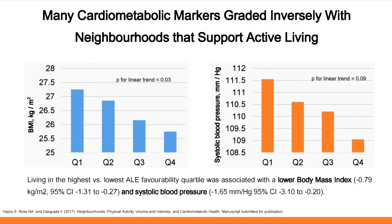Using the Canadian Health Measure Survey and looking at cardiometabolic markers — under-the-skin measures — we examined systolic blood pressure and BMI as clinical measures, showing they are graded by levels of activity friendliness of neighborhoods. The most unfriendly activity neighborhoods (Q1) down to the more walkable or activity-friendly neighborhoods (Q4) show a better cardiometabolic profile, accounting for many other factors.